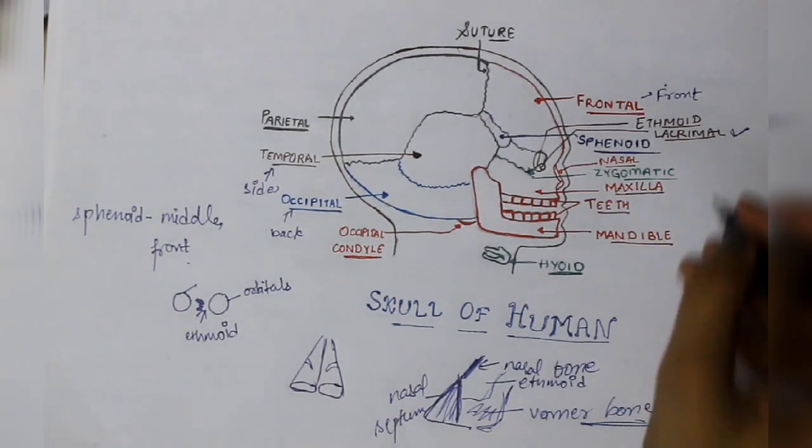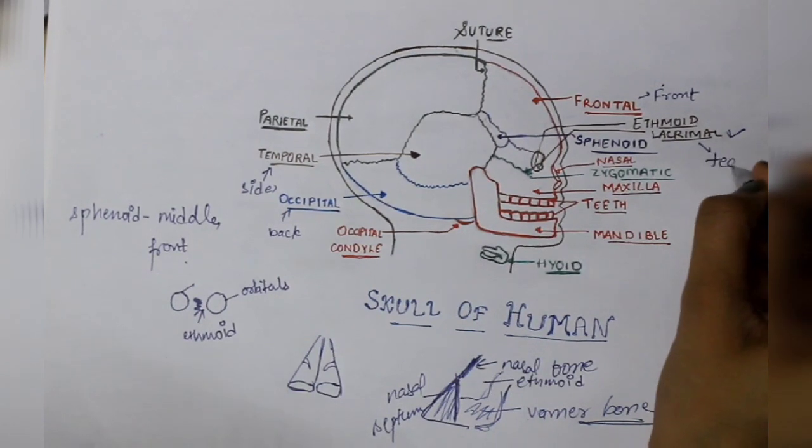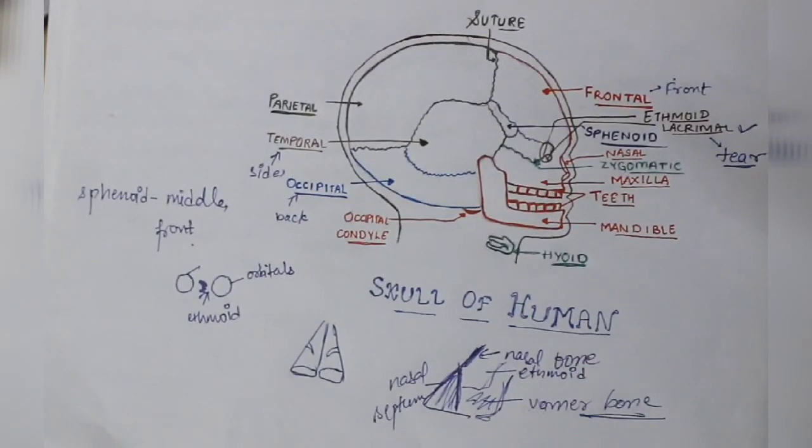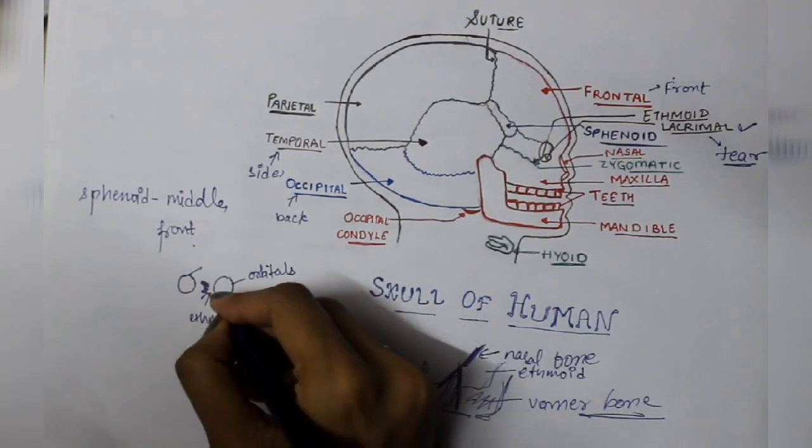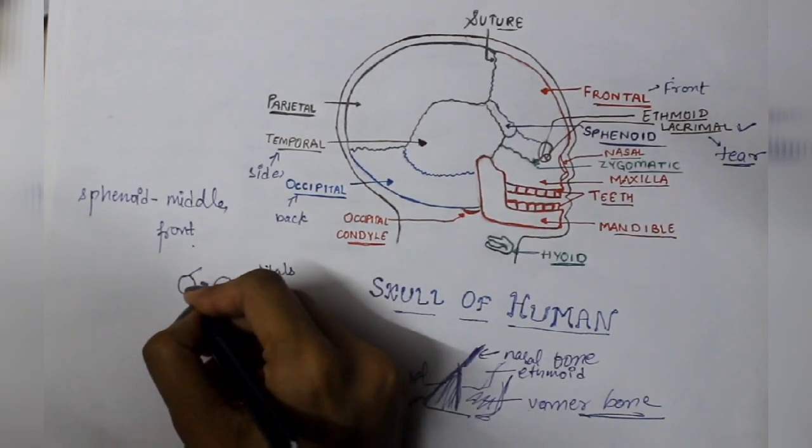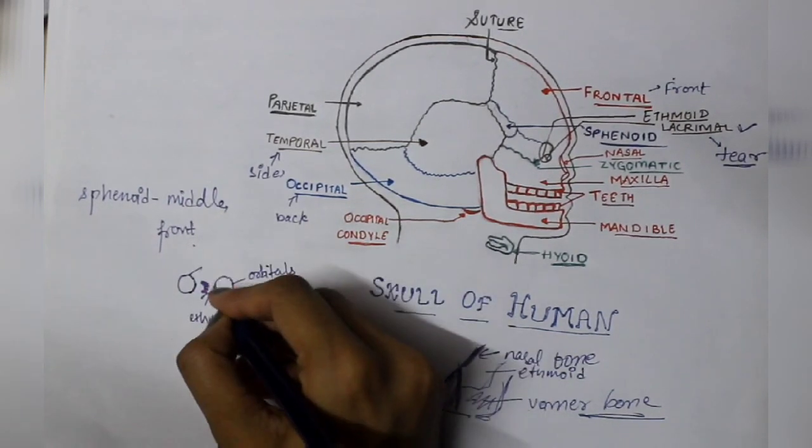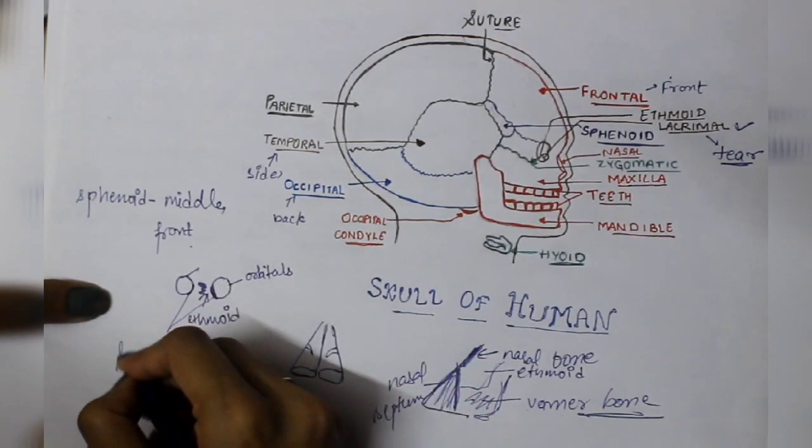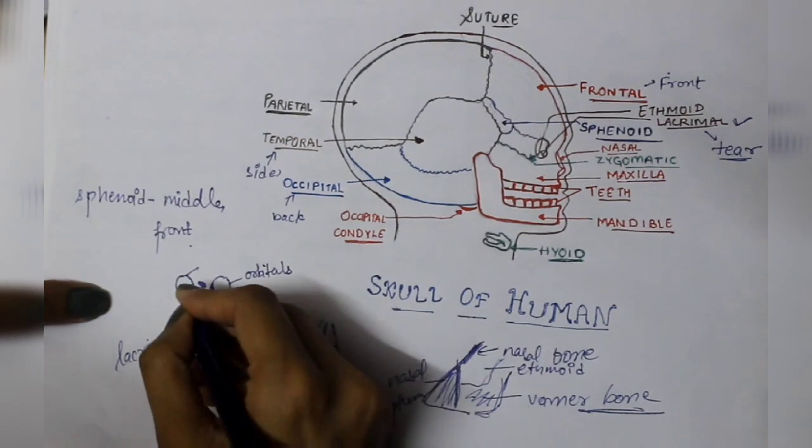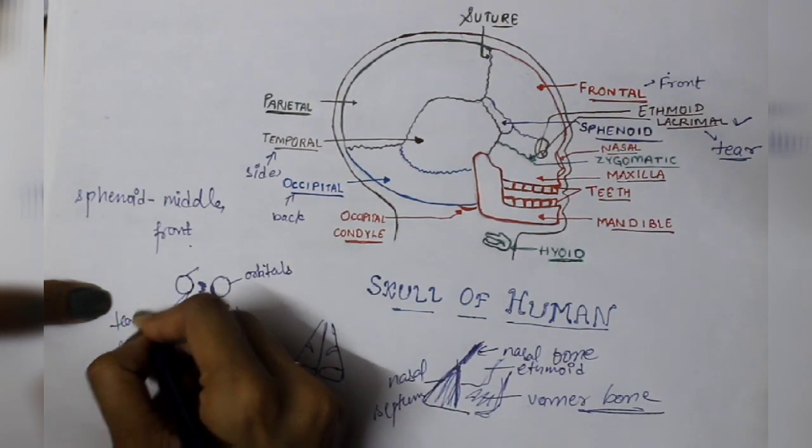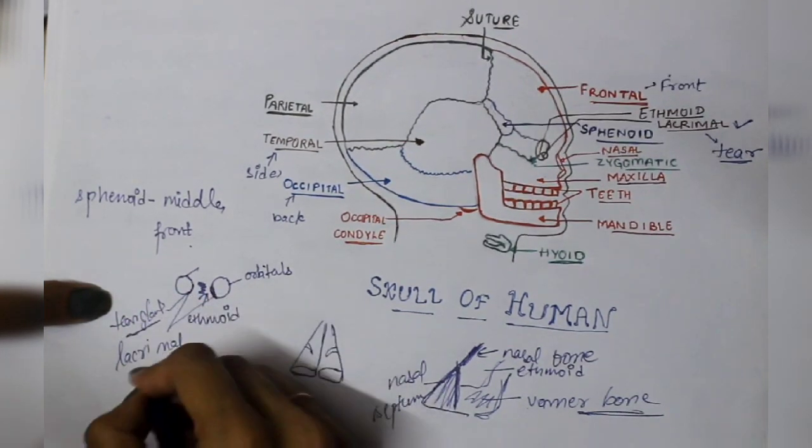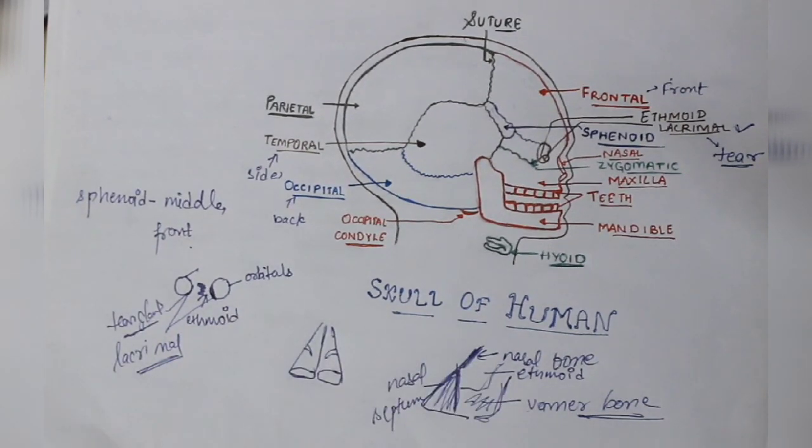Which bone came? Lacrimal bone. Lacrimal means tear. So where is it present? Your orbitals, in the anterior middle region. Here lacrimal is present. Here is your tear gland. So lacrimal bone, lacrimal which means tear, is present in anterior middle side of the orbit.